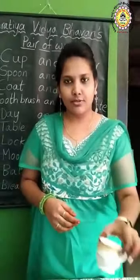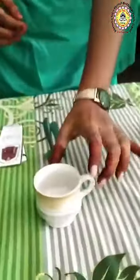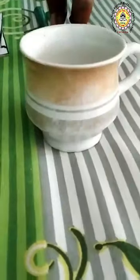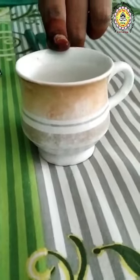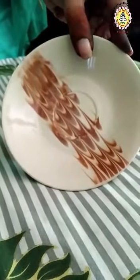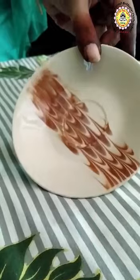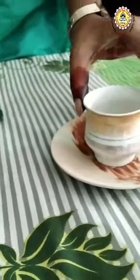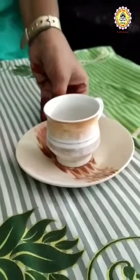Okay children, let us see some examples. Look at this — what is this? C-U-P. Cup. Do you know the pair word of cup? Here it is: saucer, S-A-U-C-E-R. So, cup and saucer.